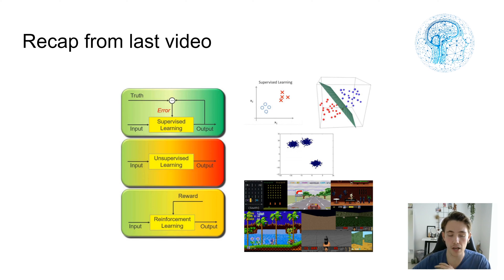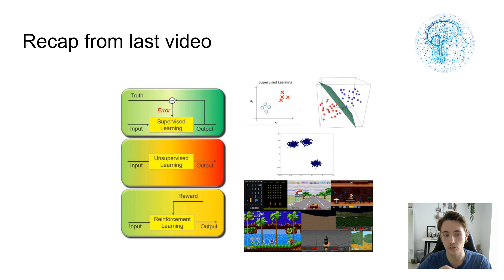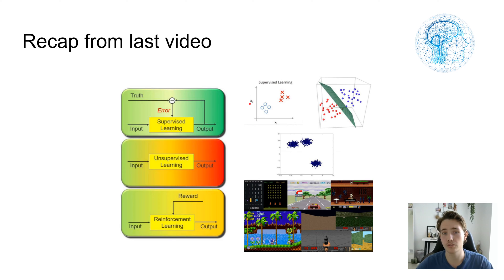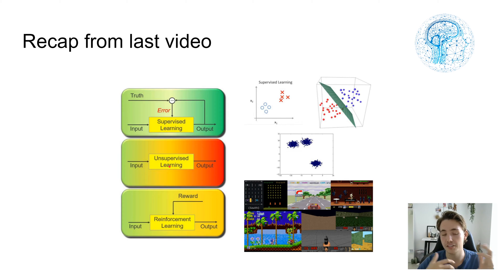From the last video we also talked about the three kinds of learning. The first is supervised learning, where we know both the input and output we give to the model — for example, if we give our model an image of a dog, it knows it's a dog. Then there's unsupervised learning, where the model doesn't know what input it's given, so it tries to find some pattern in the data.